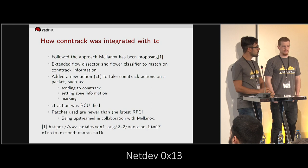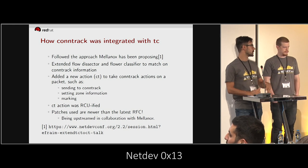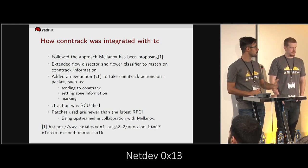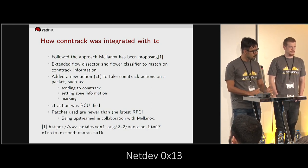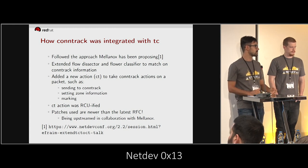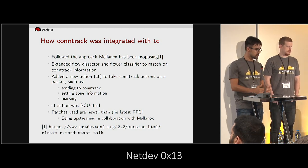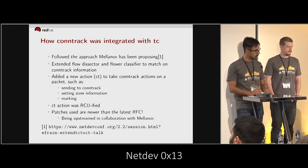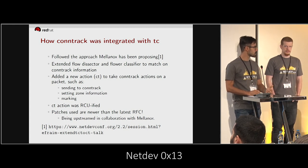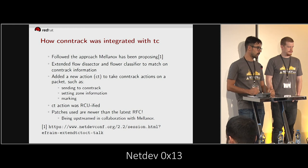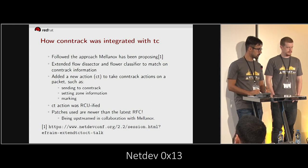And only if the pointer is already there — if it's not there yet, it's not going to fetch for you, because a match is not supposed to alter any information, even data or metadata on the packet. We also added a new action called CT. It should take conntrack actions on a packet such as sending to conntrack, which is how we get the initial information, settings, and marking for now. The CT action that we tested was RCU-ified, so we don't have any spin locks because of this action. It should scale quite well.